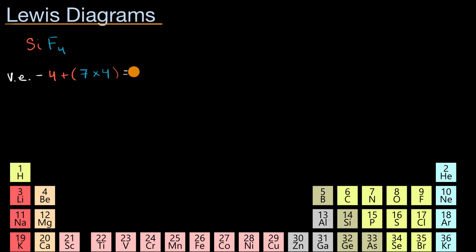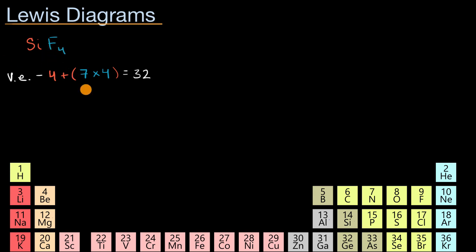So one silicon tetrafluoride molecule is going to have four plus 28 valence electrons, for a total of 32. Now the next step is to think about how these might be configured. As a general rule of thumb, we want to put the least electronegative atom that is not hydrogen at the center. You can see from the periodic table that fluorine is actually the most electronegative element.